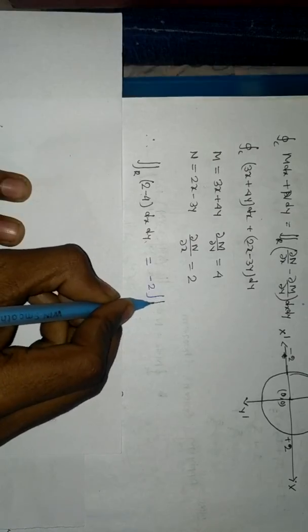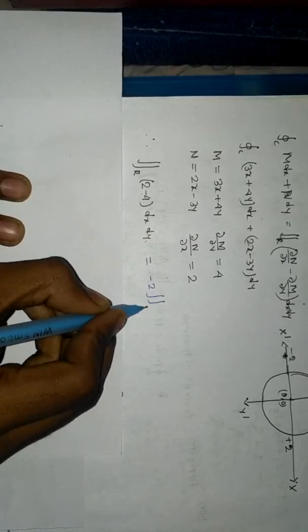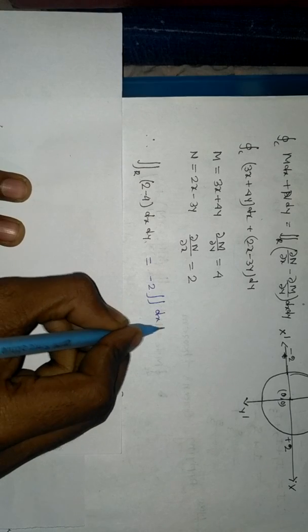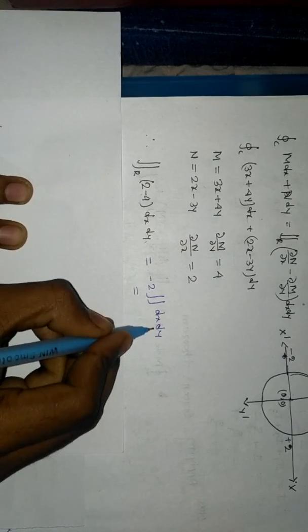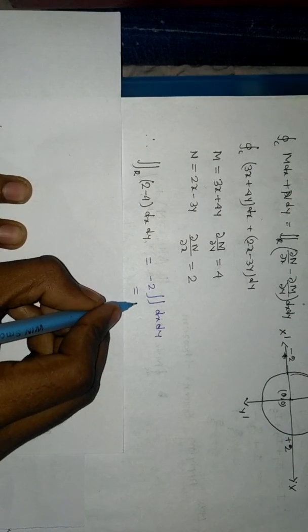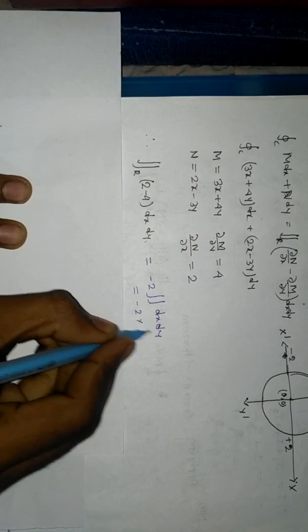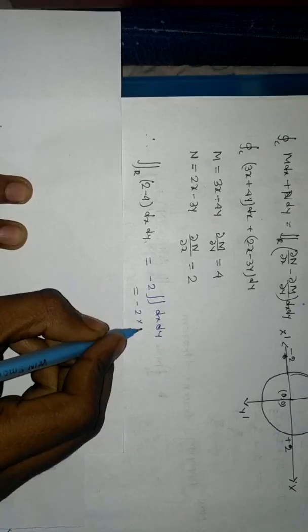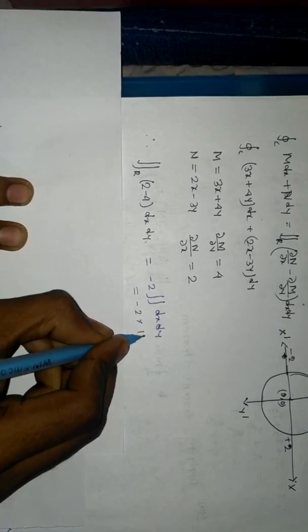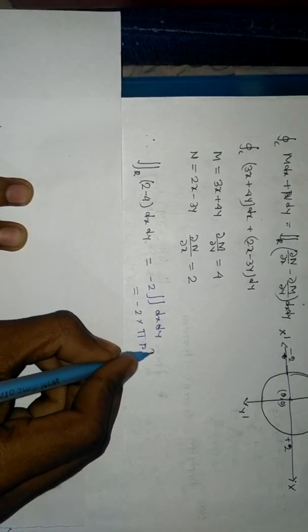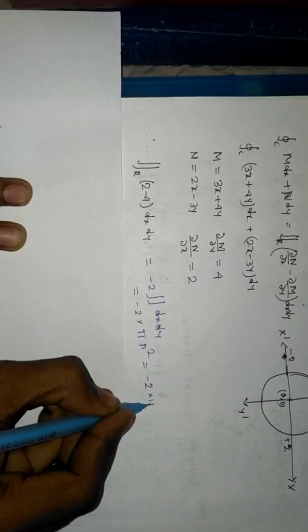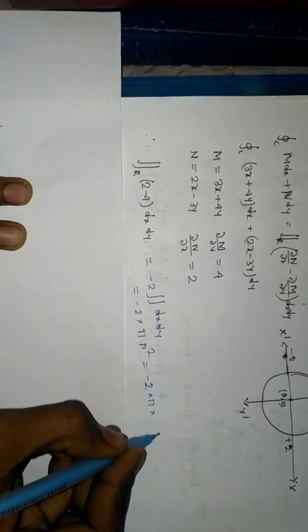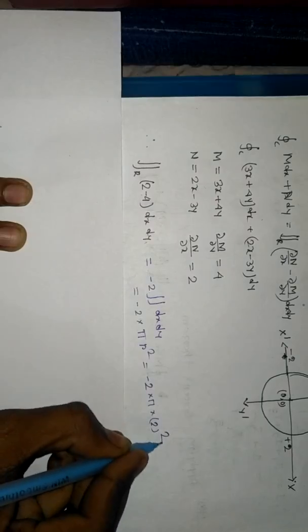This becomes minus 2 double integration dx dy. You know this is the area of the circle. The area of the circle is pi r squared. That's minus 2 times pi times r, which is 2, whole squared.